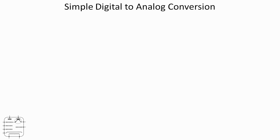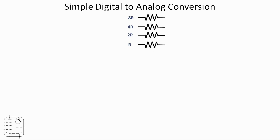Converting digital signals to analog is actually quite a bit easier than converting analog to digital. Let's think about a resistor — the current that flows through it is equal to the voltage supplied divided by the value of the resistor. In other words, it's inversely proportional to the resistance. If we double the resistance we halve the current, and if we quadruple the resistance we quarter the current. So let's take four resistors with values R, 2R, 4R, and 8R. If we feed those four resistors with a four-bit digital signal and connect the outputs together, the current at the output is going to be proportional to the digital signal supplied.